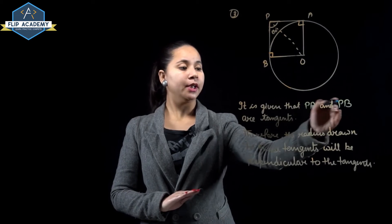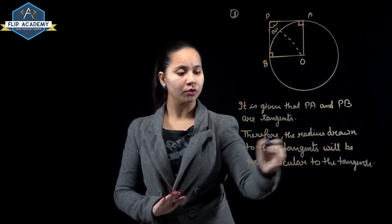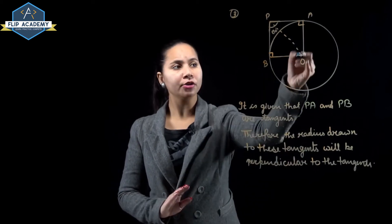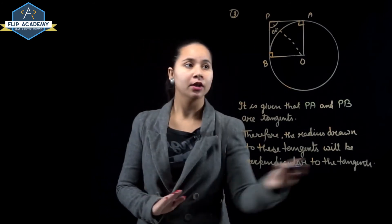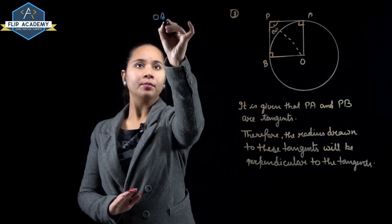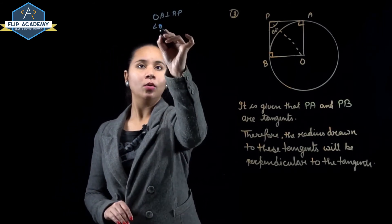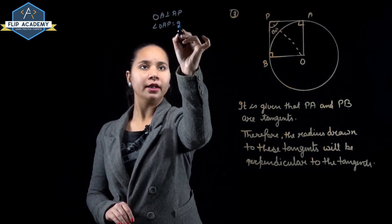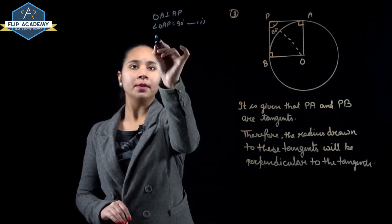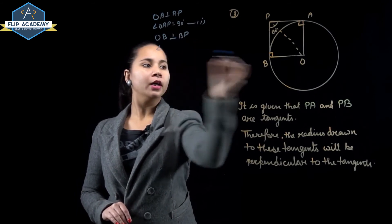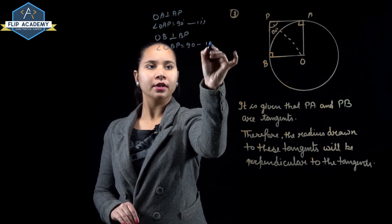PA and PB are tangents. Therefore the radius drawn to these tangents will be perpendicular to them. So OA is perpendicular to AP, meaning angle OAP equals 90° (equation 1). Similarly, OB is perpendicular to BP, so angle OBP equals 90° (equation 2).